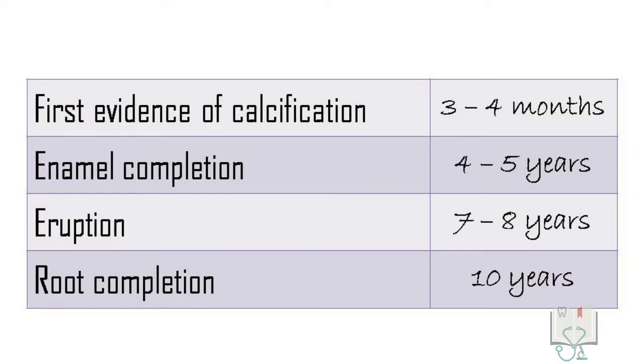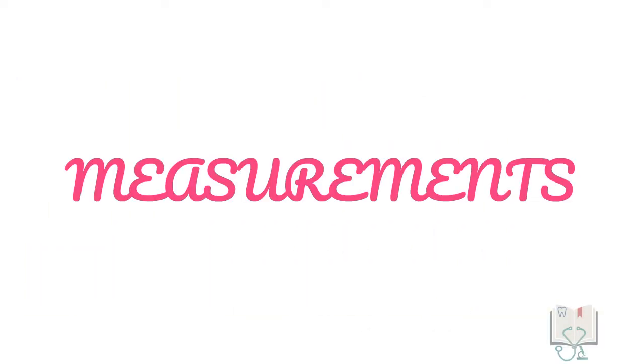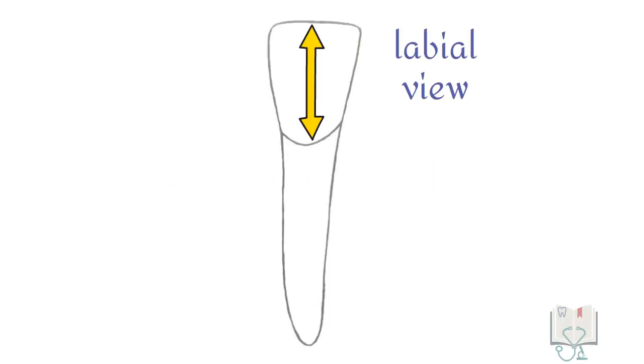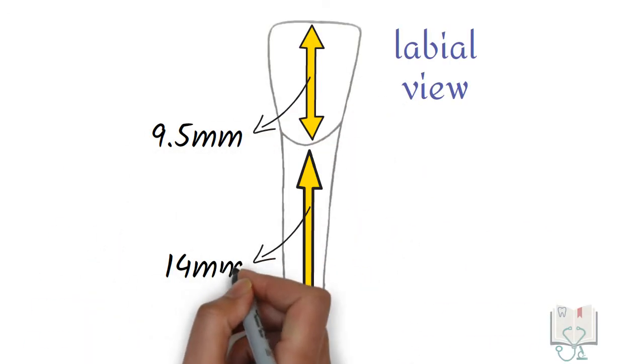The age of eruption of mandibular lateral incisor is 7 to 8 years. Coming to its dimensions, the crown length is 9.5 mm and root length is 14 mm.